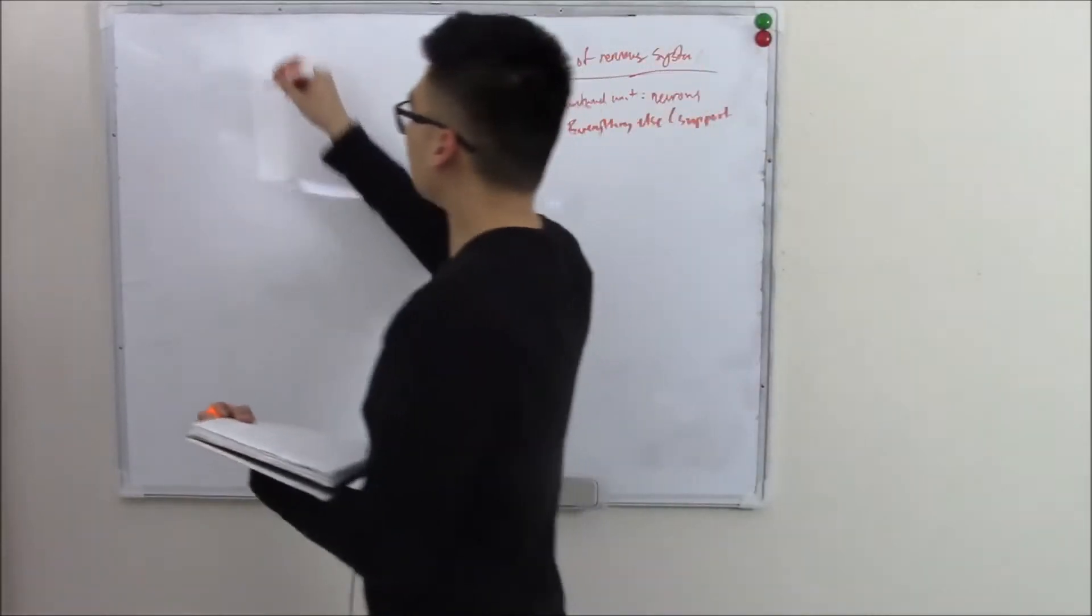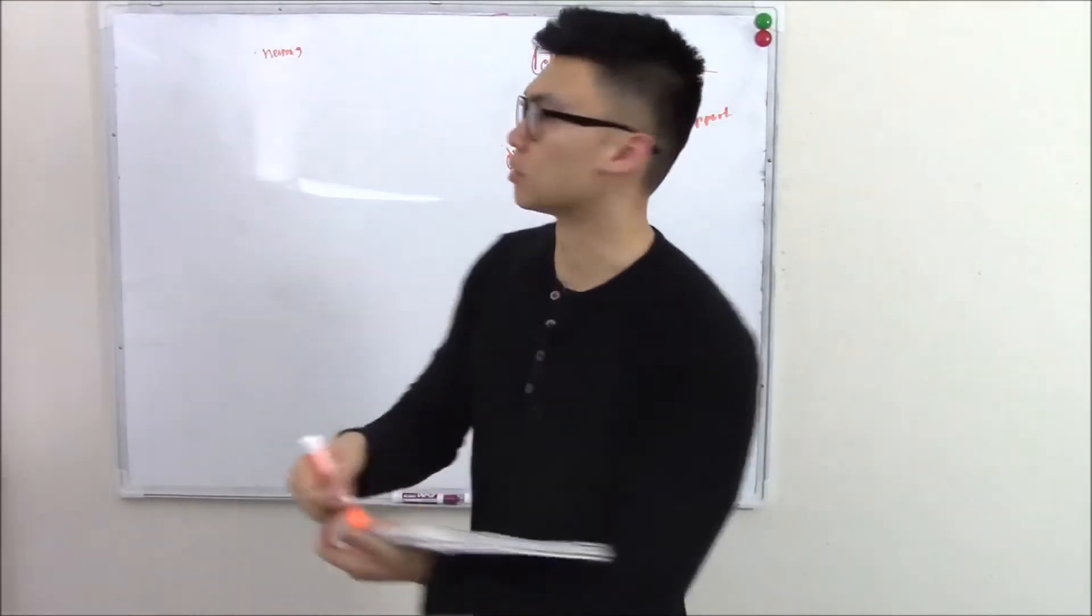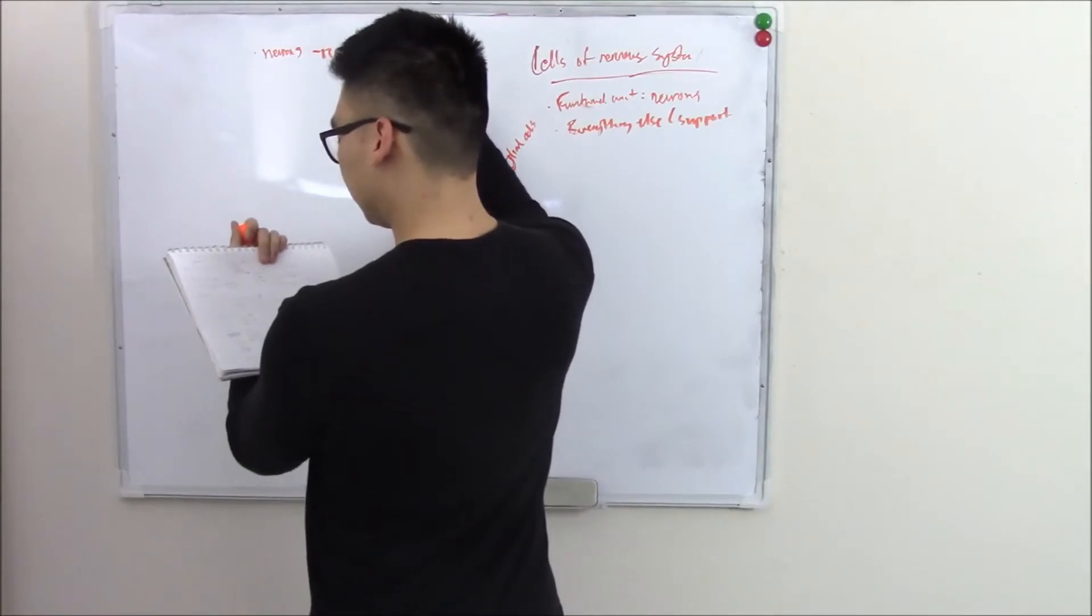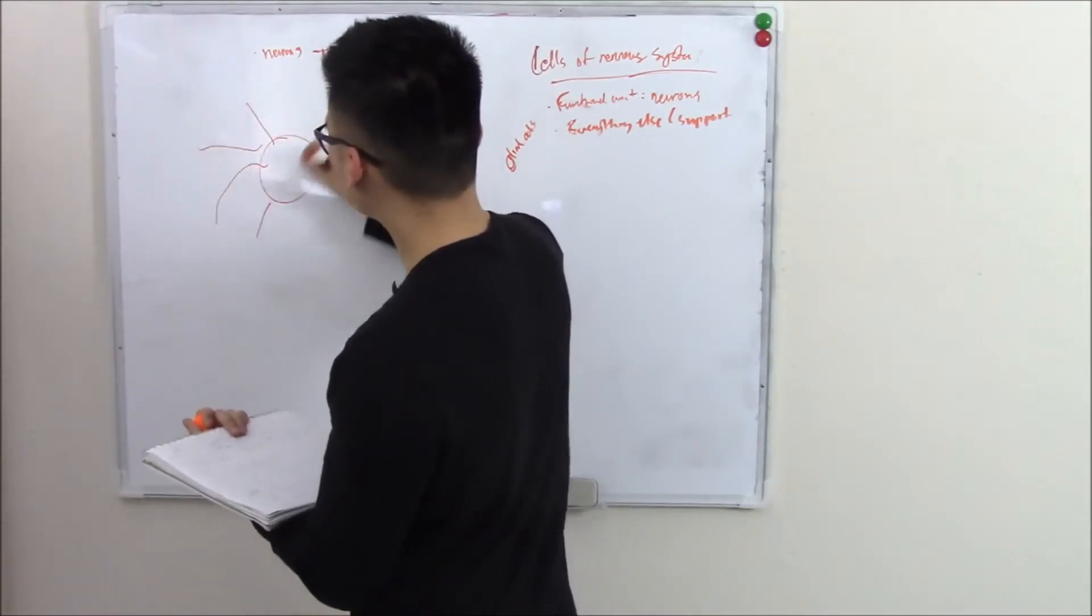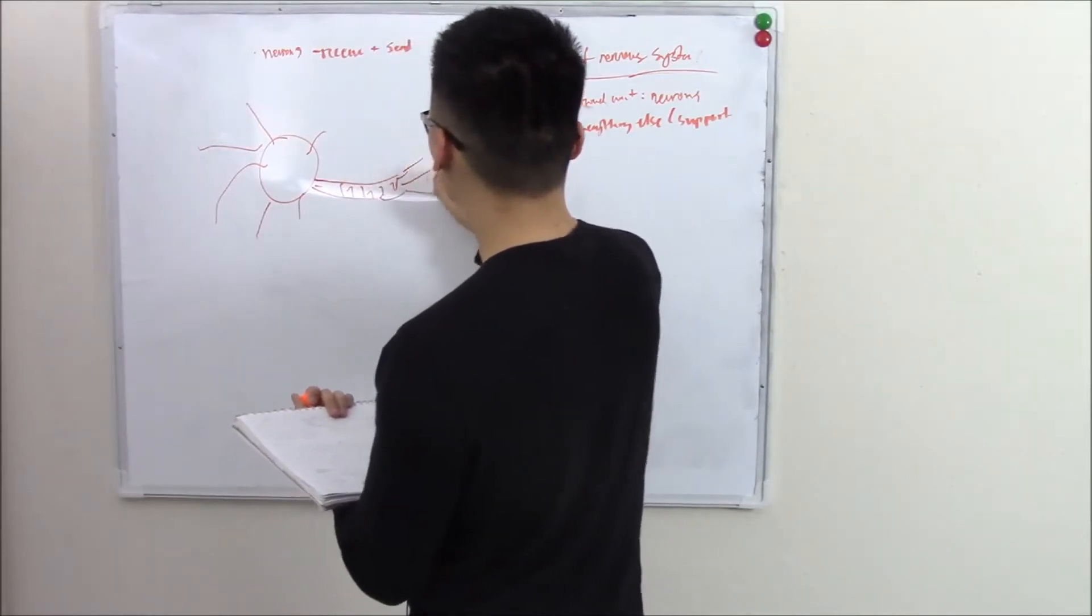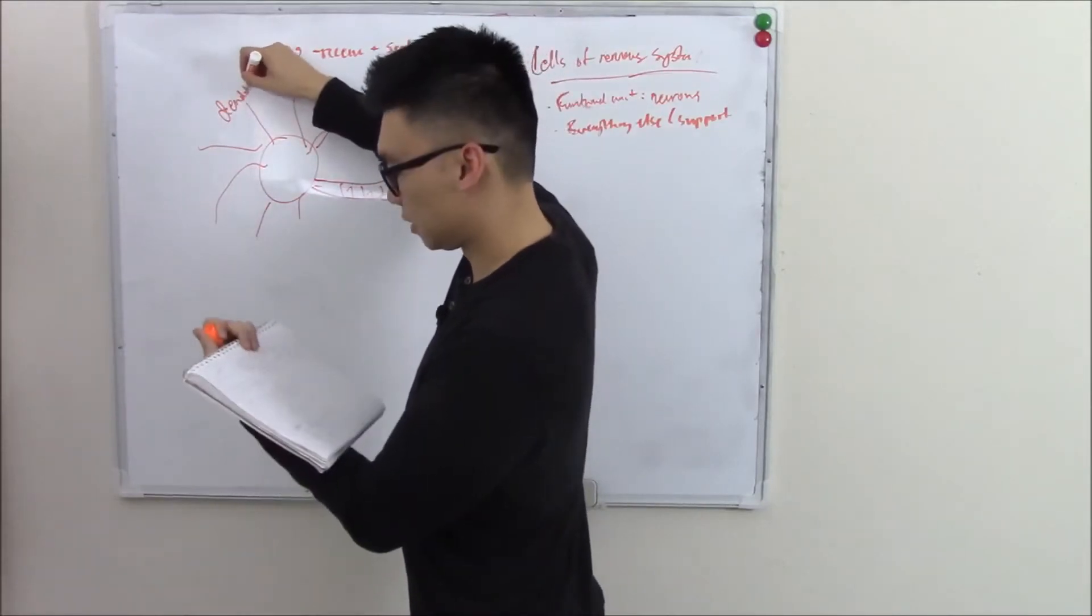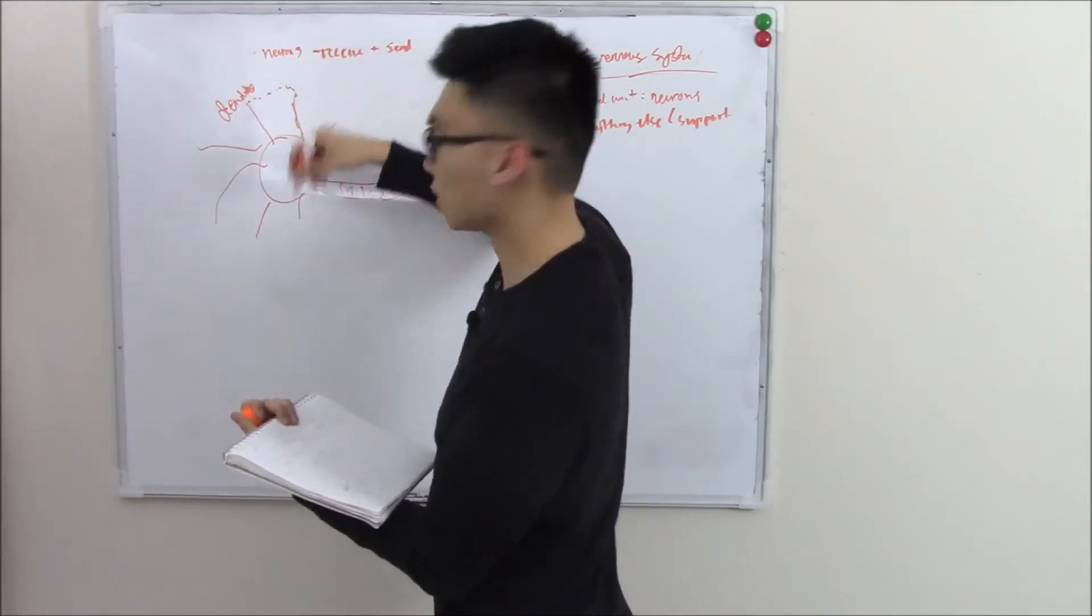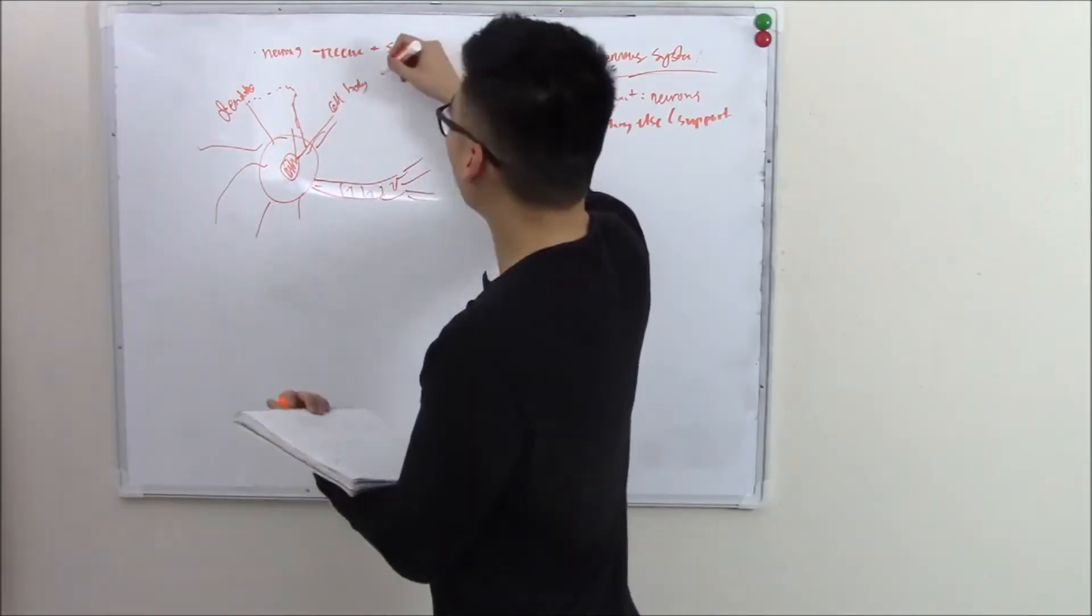So we'll talk about the neurons first. Your neurons are your functional unit, so these cells are the actual cells that receive and send signals. Just a recap of their anatomy - they receive signals through these projections called dendrites. Neurotransmitters hit these dendrites, they receive the signals, it goes into the cell body where it interprets it.